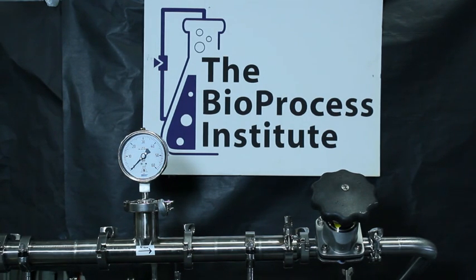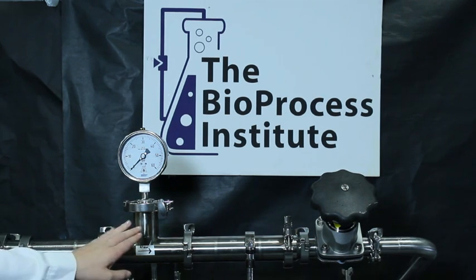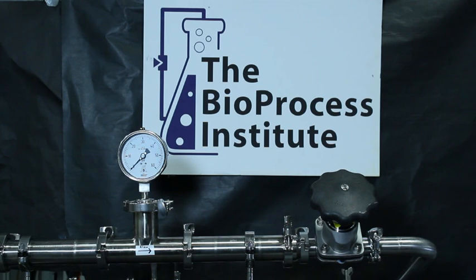Today we will be studying the effects of T configurations on systems. Here we have a typical setup with a 2 inch stainless steel T with a pressure gauge ranging from 0 to 60 psi to monitor our system pressure.